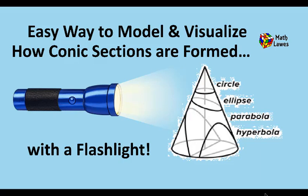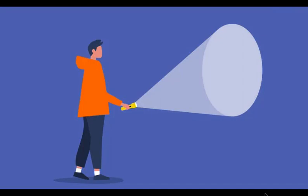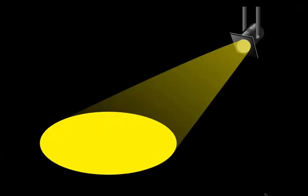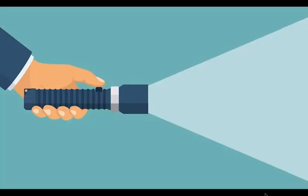Here's an easy way to visualize and model how conic sections are formed by slicing a cone. We've probably all seen a cartoon character with a flashlight in a dark room — it kind of looks like a cone of light. If we look at it from the side, the cone looks like a two-dimensional triangle. But since it's three-dimensional, it really is a cone.